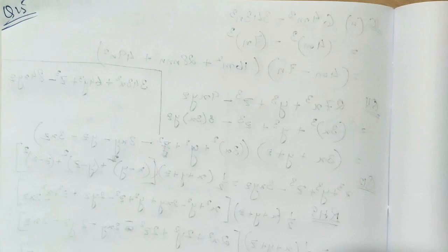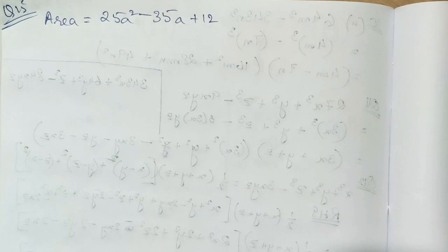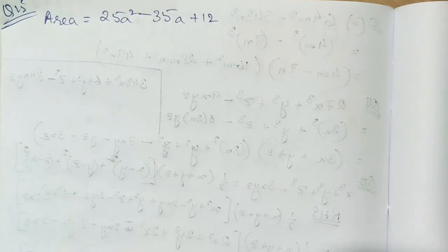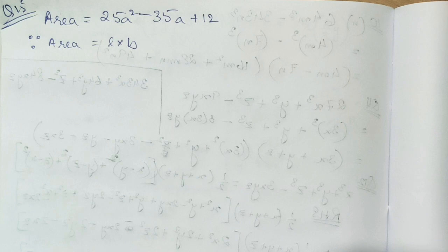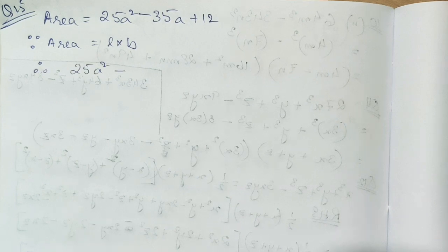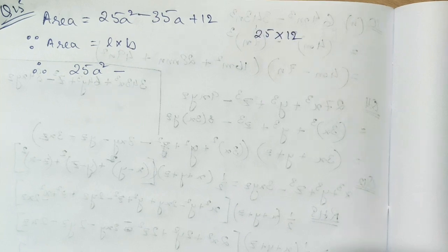Now let's move on to the next part in which area of a rectangle is given, and what we need to do here is calculate the length and the breadth. So actually what we need to do is factorize this equation, because length and breadth are the factors of area. So we will apply the splitting the middle term here.